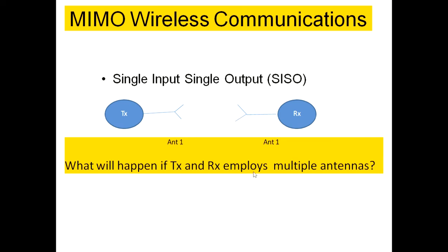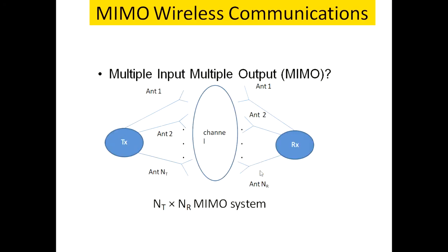we have to replace this single antenna at both transmitter and receiver with multiple antennas. Using multiple antennas at both transmitter and receiver gives us Multiple Input Multiple Output — MIMO.